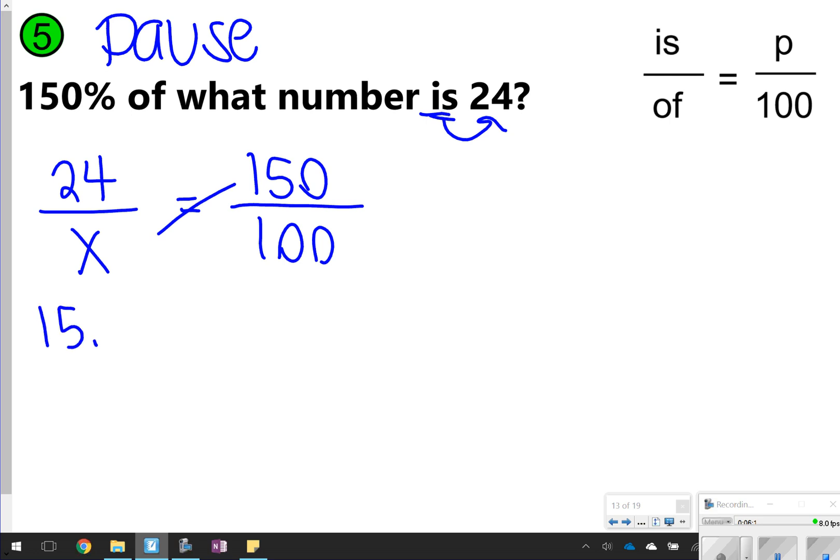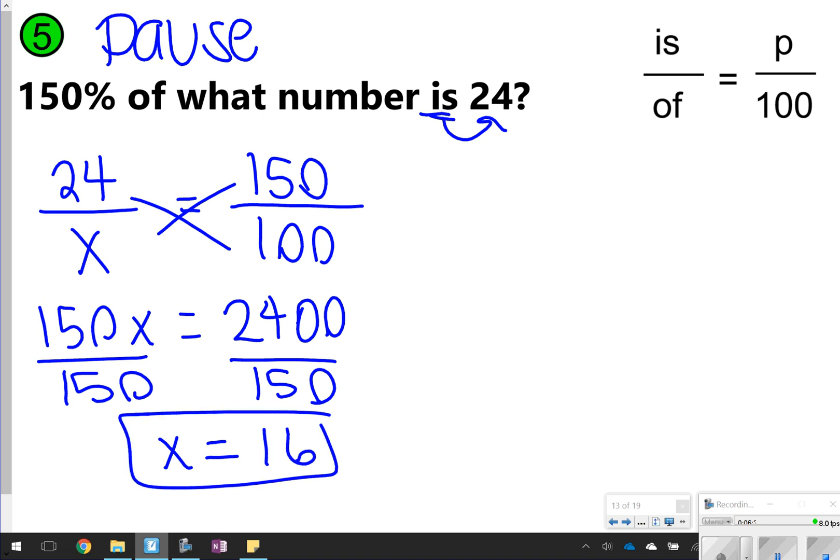I'm going to cross multiply 150 times x, and 24 times 100, 2400. And then I'm going to divide both sides by 150. x will be equal to 16. So 150% of 16 is 24.